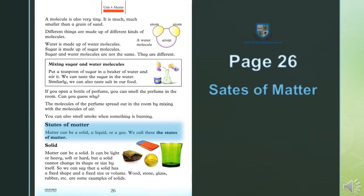Page 26: States of matter. Matter yani maada ki haalten ya maada ki conditions. Matter can be a solid, a liquid or a gas. Maada ho sakta hai ek thos, ek maaya, ya ek gas. We call these the states of matter — aur in tino ko hum maada ki haalten kehtay hain.